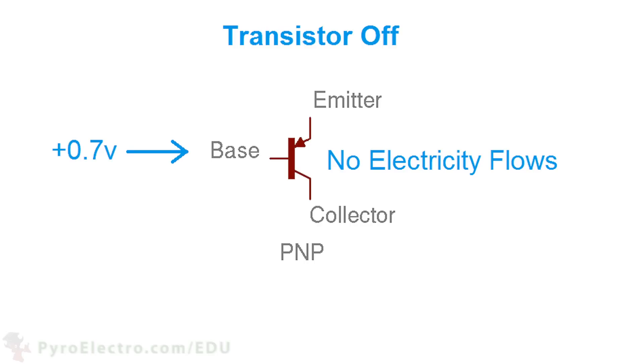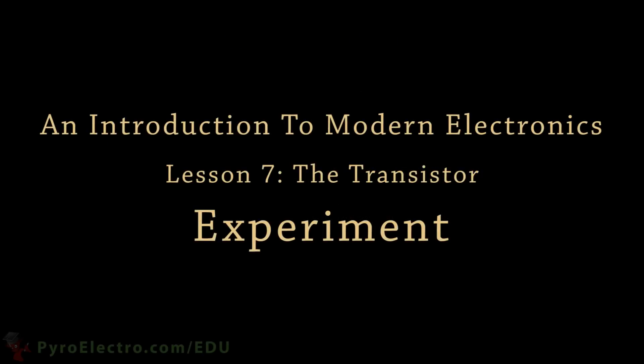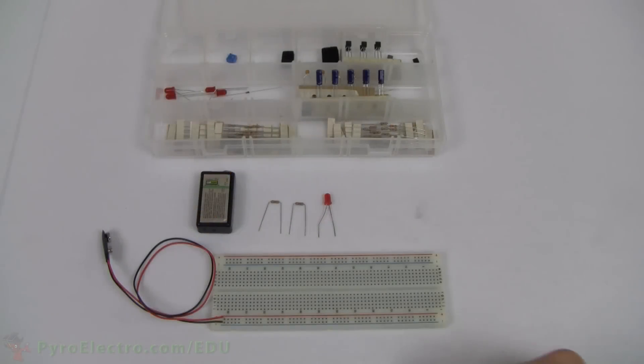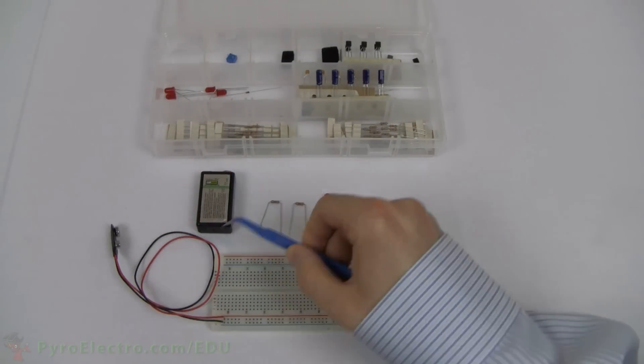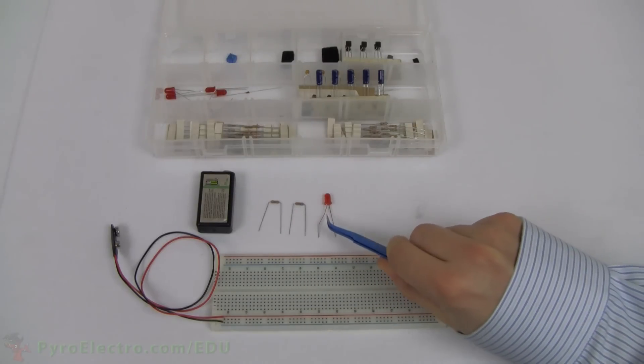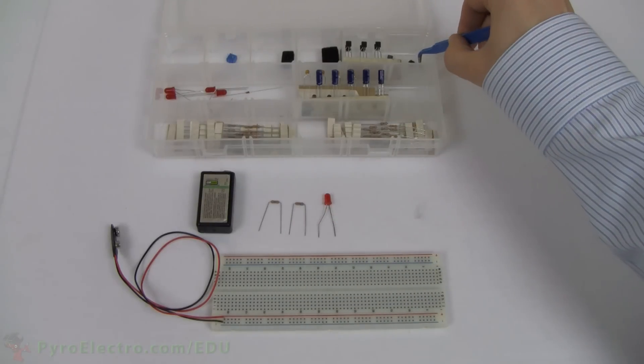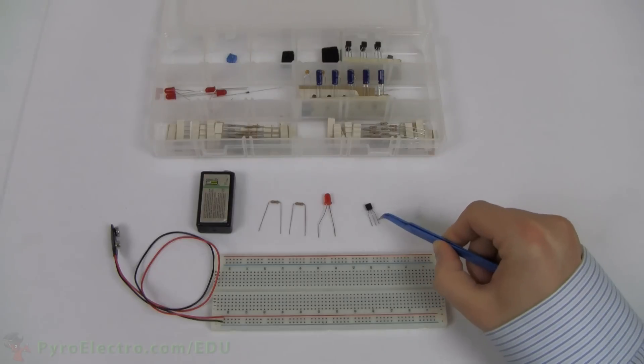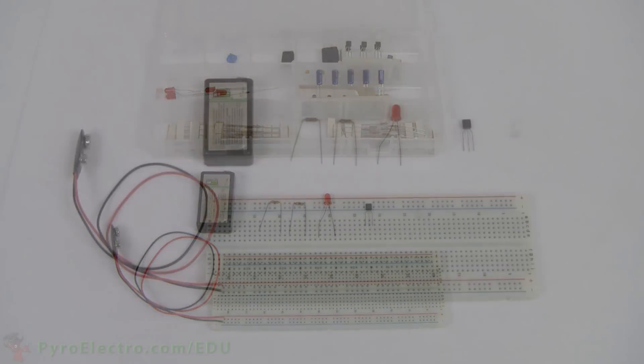So the PNP works just like an NPN transistor, just opposite. Let's perform the same experiment as we saw in the introduction, but this time we'll use the 2N3906 PNP type transistor. From the parts kit, you'll need a 9V connector, a 9V battery, two 470 ohm resistors, a red LED, a 2N3906 PNP type transistor, and a breadboard.